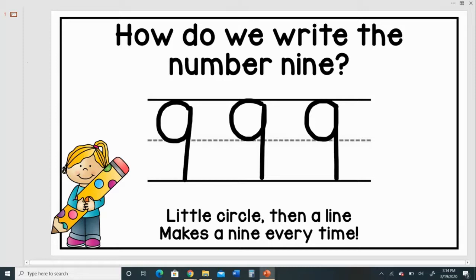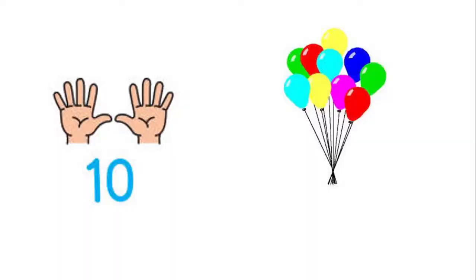And after the number 9 comes the big number. The number 10. We have the number 10. All our fingers are free now for the number 10. And let's see if we do have 10 balloons here. One, two, three, four, five, six, seven, eight, nine, ten. So that's the number 10.